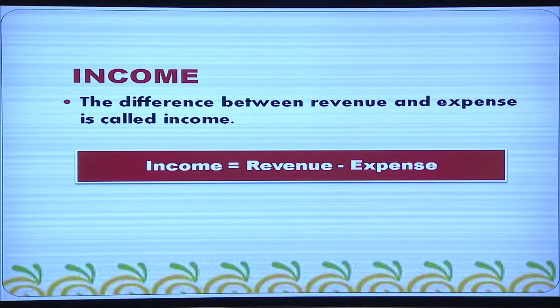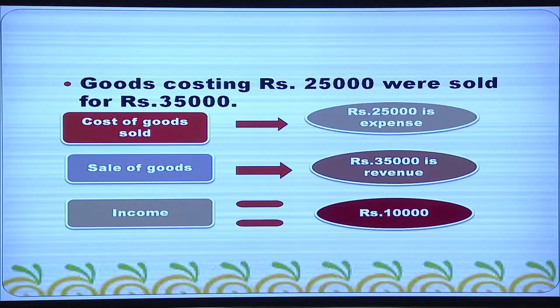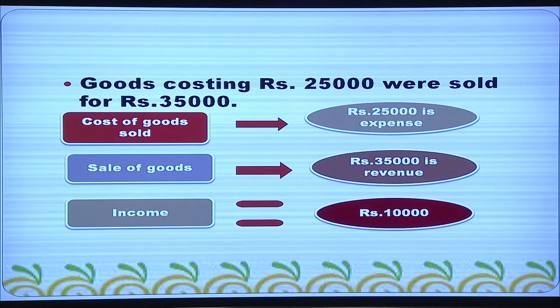The difference between revenue and expense is the income. Here is a transaction: goods costing rupees 25,000 were sold for rupees 35,000. The cost of goods sold is rupees 25,000 — that is the expense. The sale of goods is made for rupees 35,000 — that is the revenue. Income is equal to revenue minus expense, that is 35,000 minus 25,000, which equals 10,000.